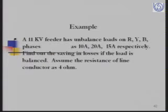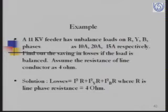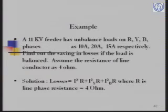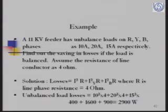For example, if an 11 kV feeder has unbalanced loads on R, Y, and B phases as 10 A, 20 A, and 15 A respectively, and the line resistance is 4 ohm, then the losses will be I²R for each phase: 10² × 4 + 20² × 4 + 15² × 4, which works out to 2900 W under unbalanced load.